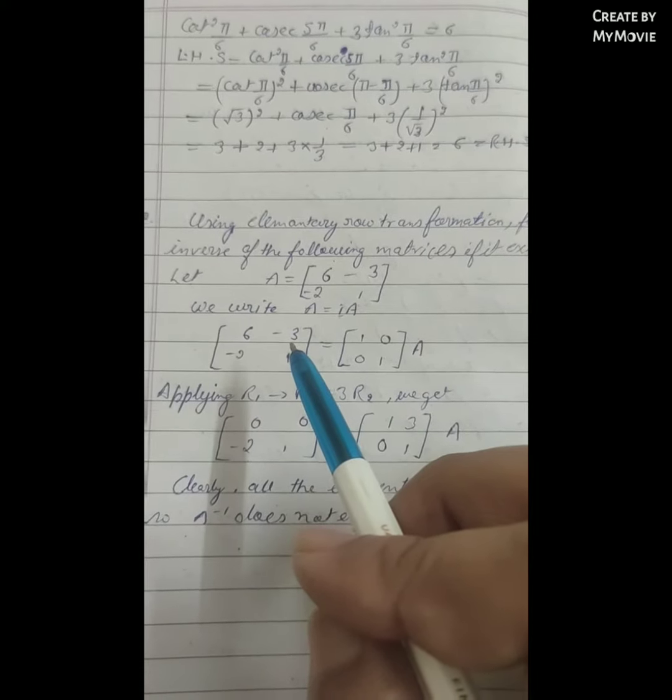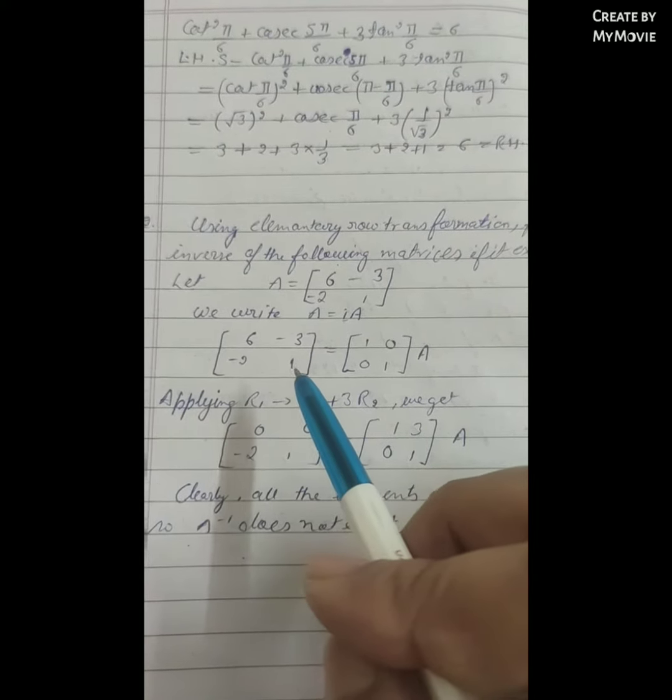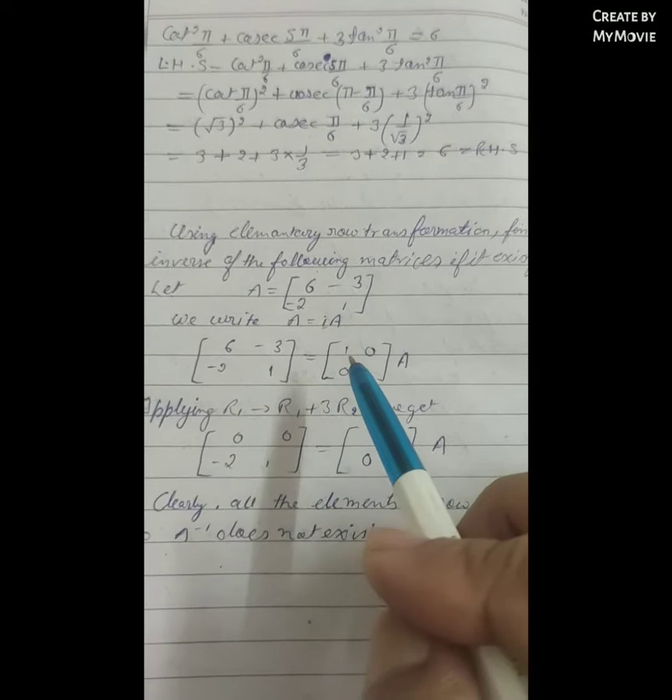I times A. So the matrix [6, -3; -2, 1] equals [1, 0; 0, 1] times A.